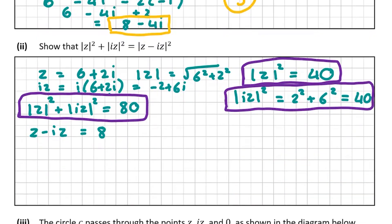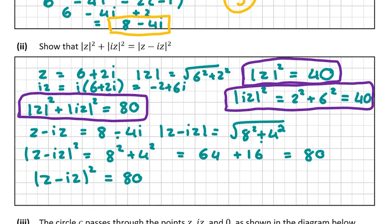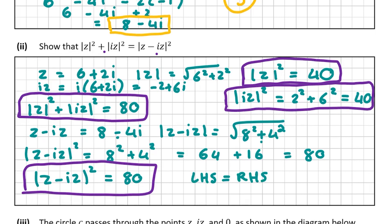So z minus iz is 8 minus 4i. The modulus of z minus iz is the square root of 8 squared plus 4 squared. An important point: when there's a minus sign, it doesn't become 8 squared minus 4 squared — it's always a positive sum. Since we're squaring the modulus, we get 8 squared plus 4 squared, which is 64 plus 16, equals 80. Left-hand side equals right-hand side — proved.